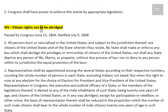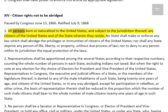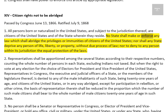Amendment 14: Citizens' Rights Not to be Abridged. Passed by Congress June 13, 1866. Ratified July 9, 1868. 1. All persons born or naturalized in the United States, and subject to the jurisdiction thereof, are citizens of the United States and of the State wherein they reside. No State shall make or enforce any law which shall abridge the privileges or immunities of citizens of the United States, nor shall any State deprive any person of life, liberty, or property, without due process of law, nor deny to any person within its jurisdiction the equal protection of the laws.